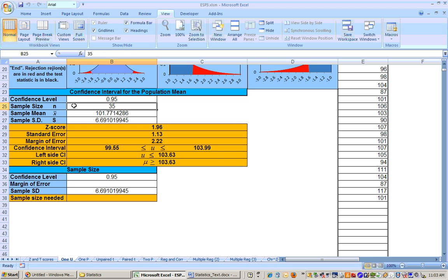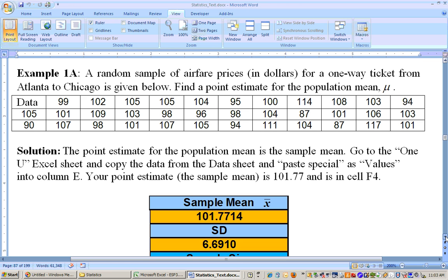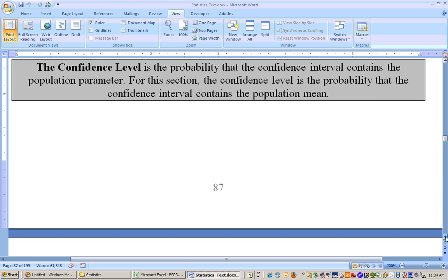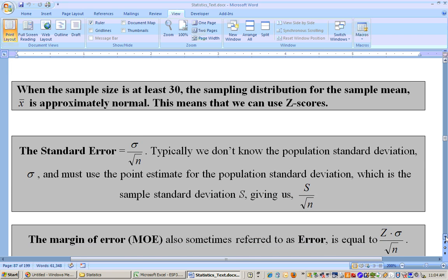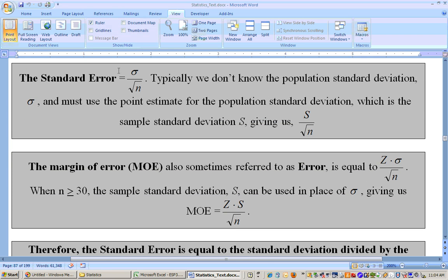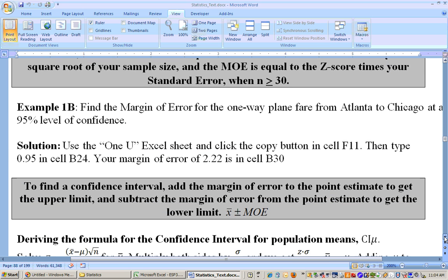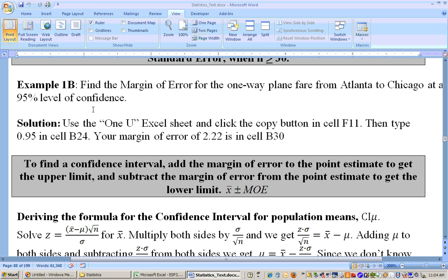Let's do a 95% confidence interval for the average cost of air flights from Atlanta to Chicago. From these 35 flights, we found that the sample mean is 101.77, with a standard deviation of 6.69. This uses a Z-score because the sample size is greater than or equal to 30. The Z-score that corresponds to a confidence level of 95% is 1.96. The standard errors are already calculated for you, and the margin of error is also automatically calculated.